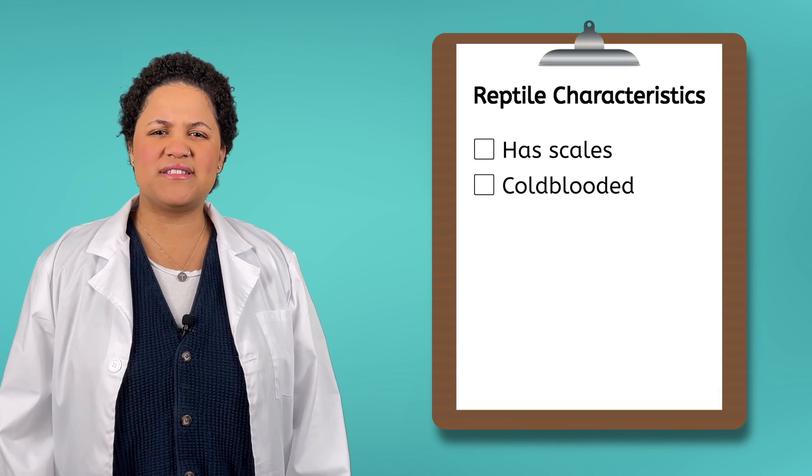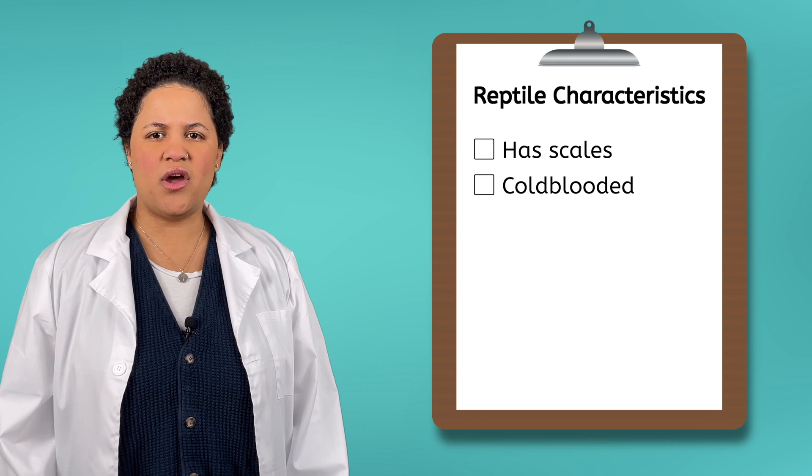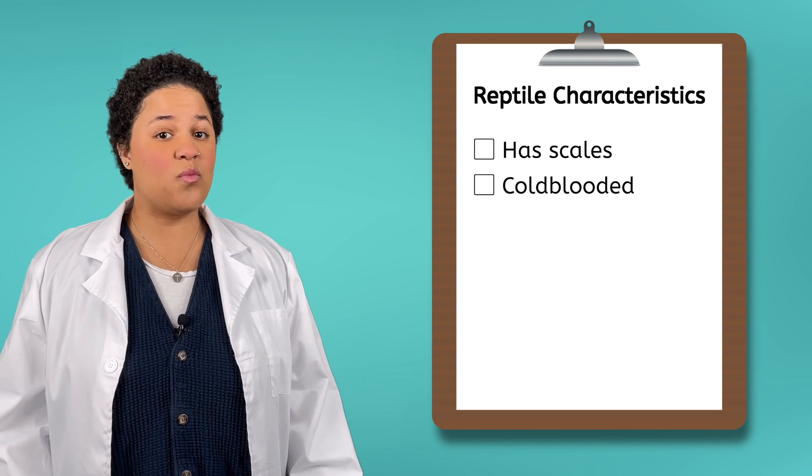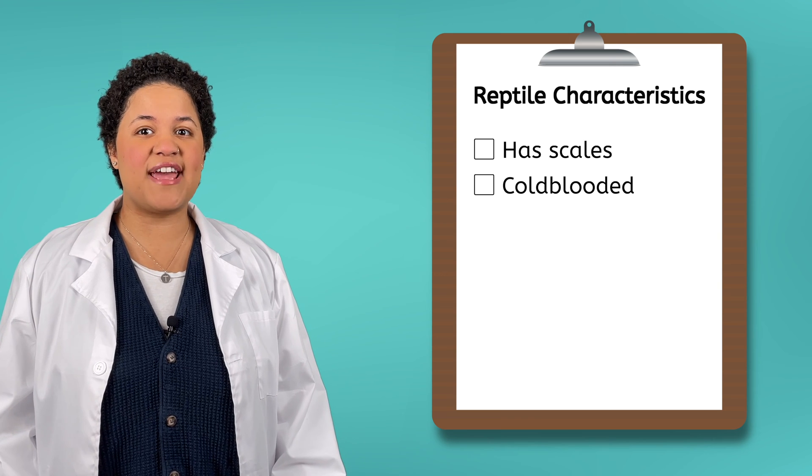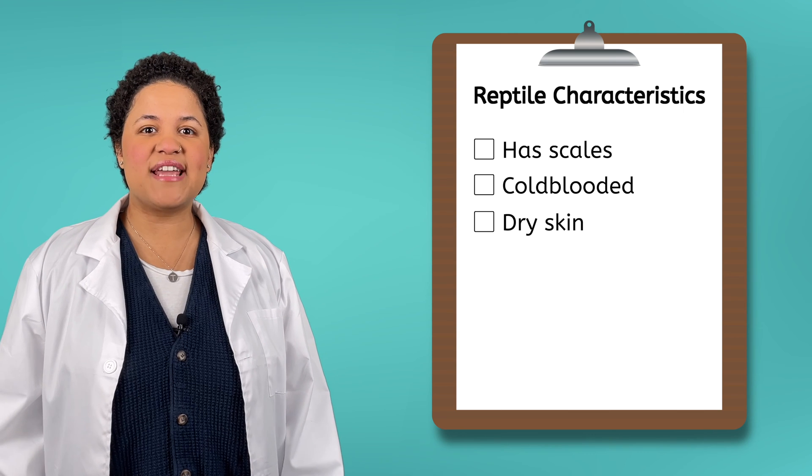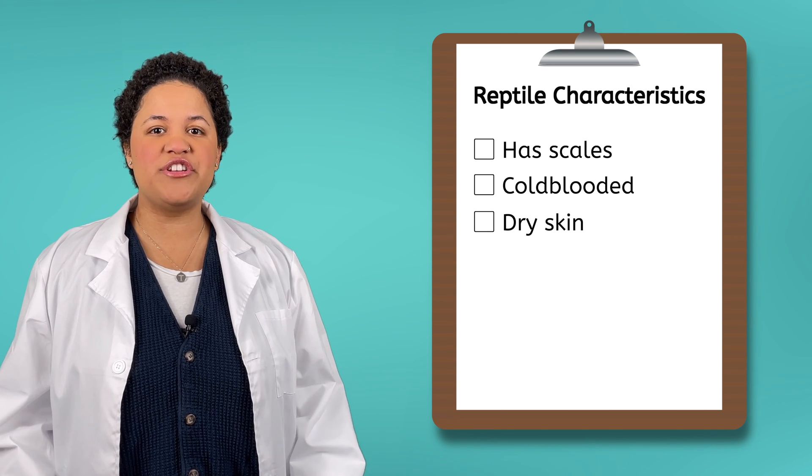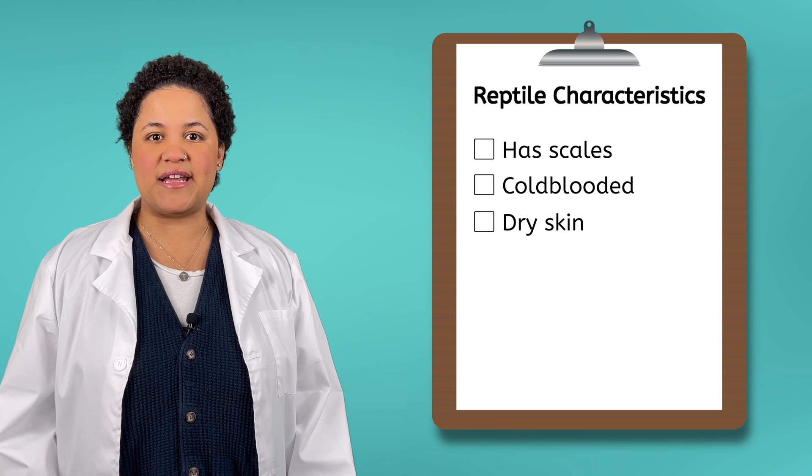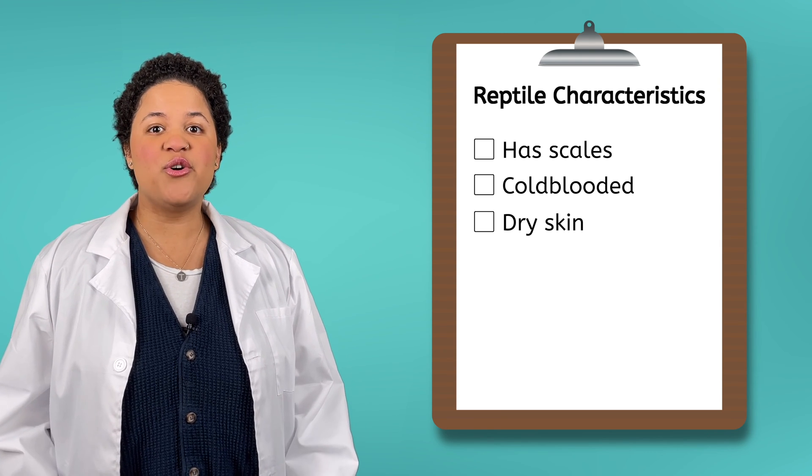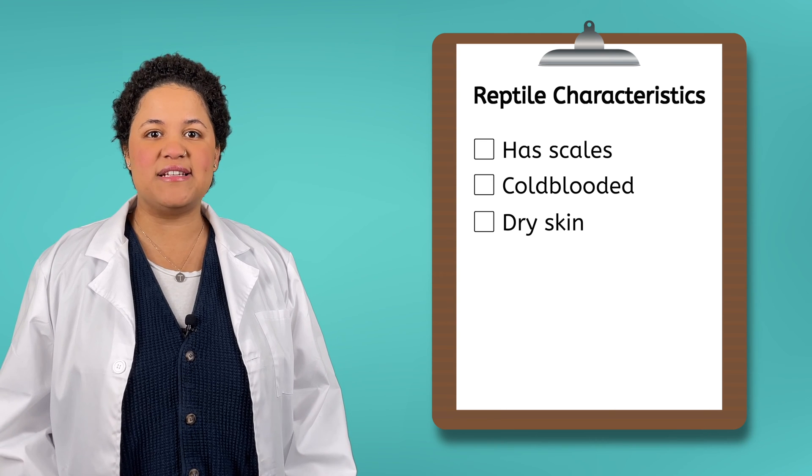Besides having scales and being cold-blooded, what are some other characteristics of reptiles? Well, underneath their scales, reptiles have dry skin. Their skin stays very dry to help their scales hold moisture inside the animal's body. The dry skin is especially helpful to reptiles who live in very dry or hot places.